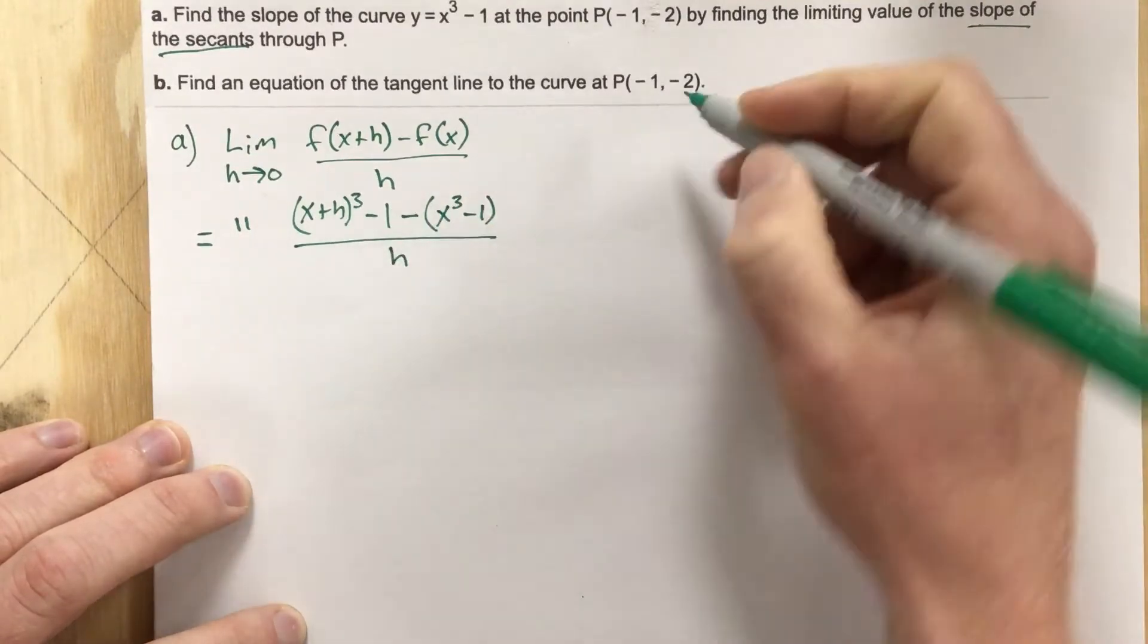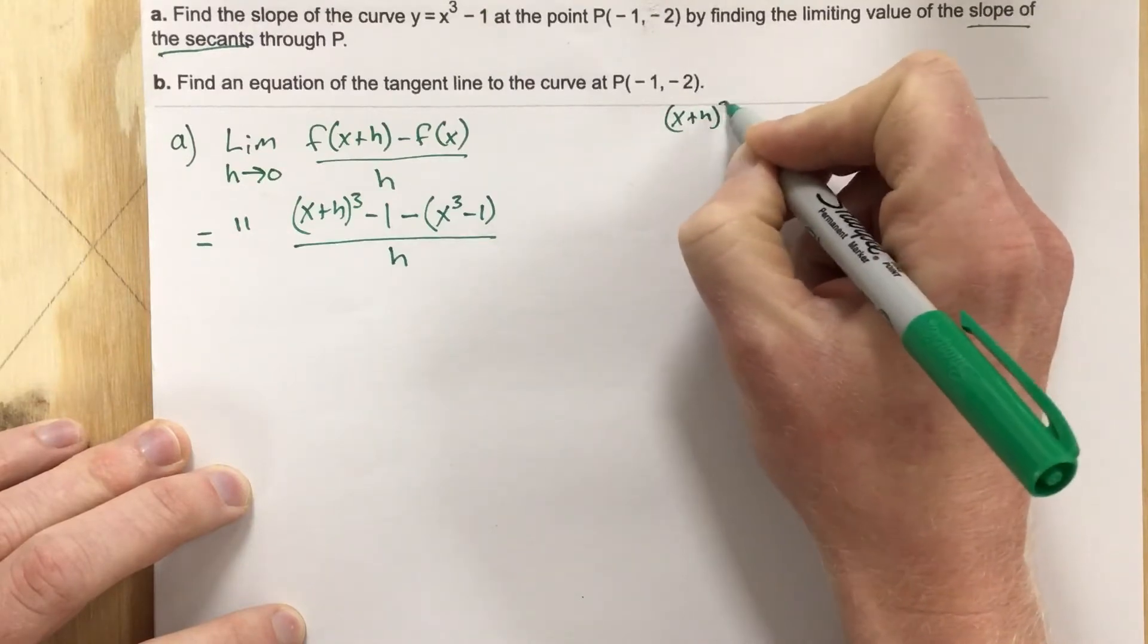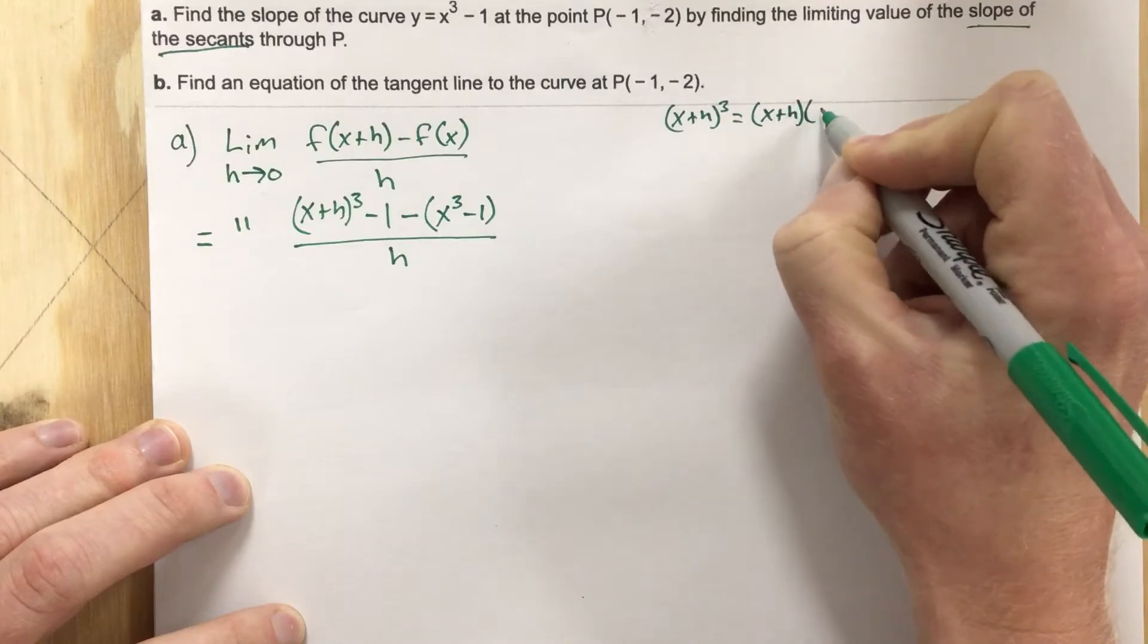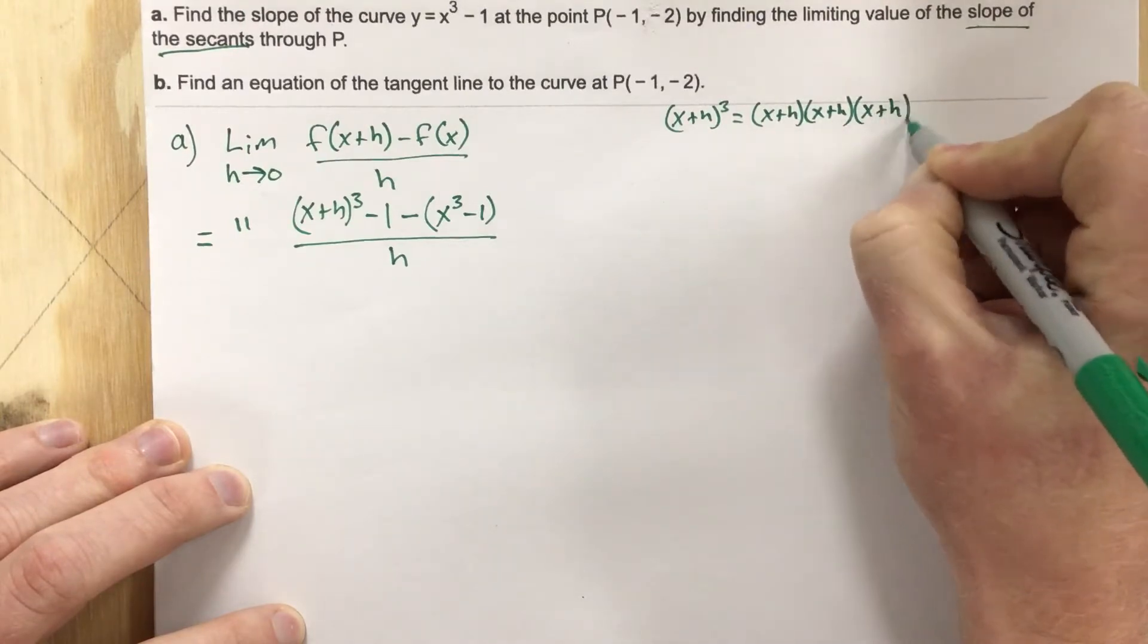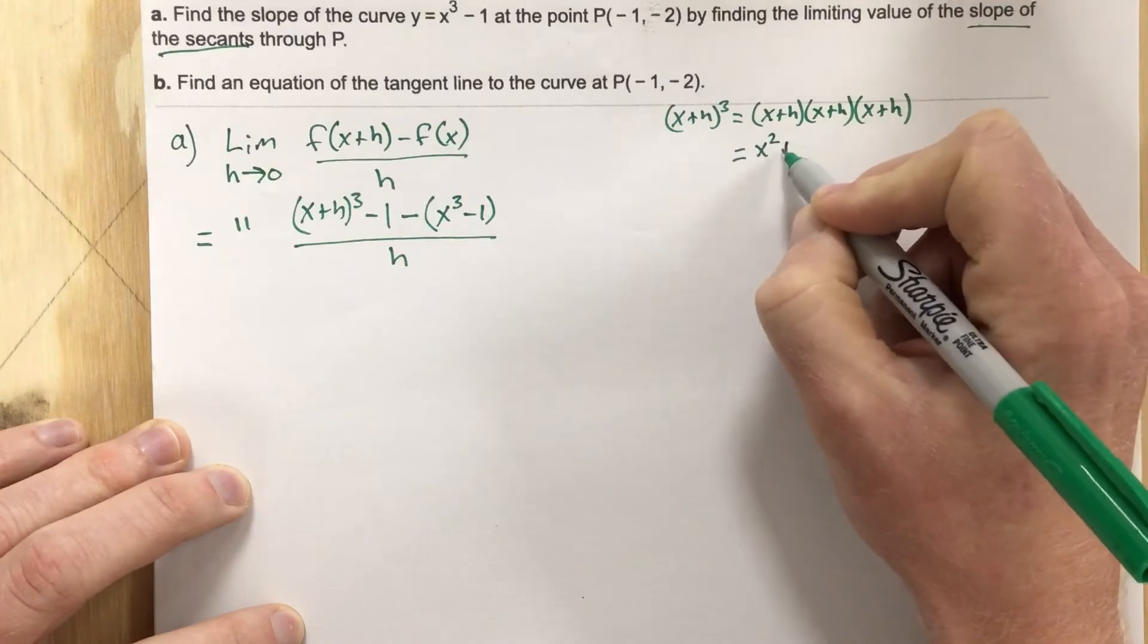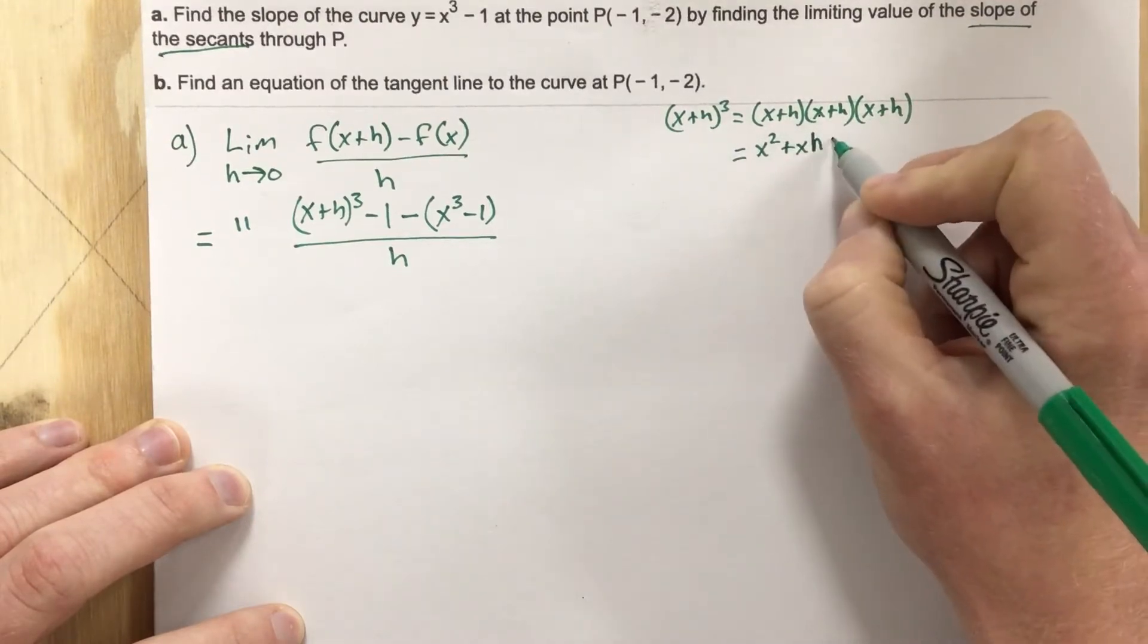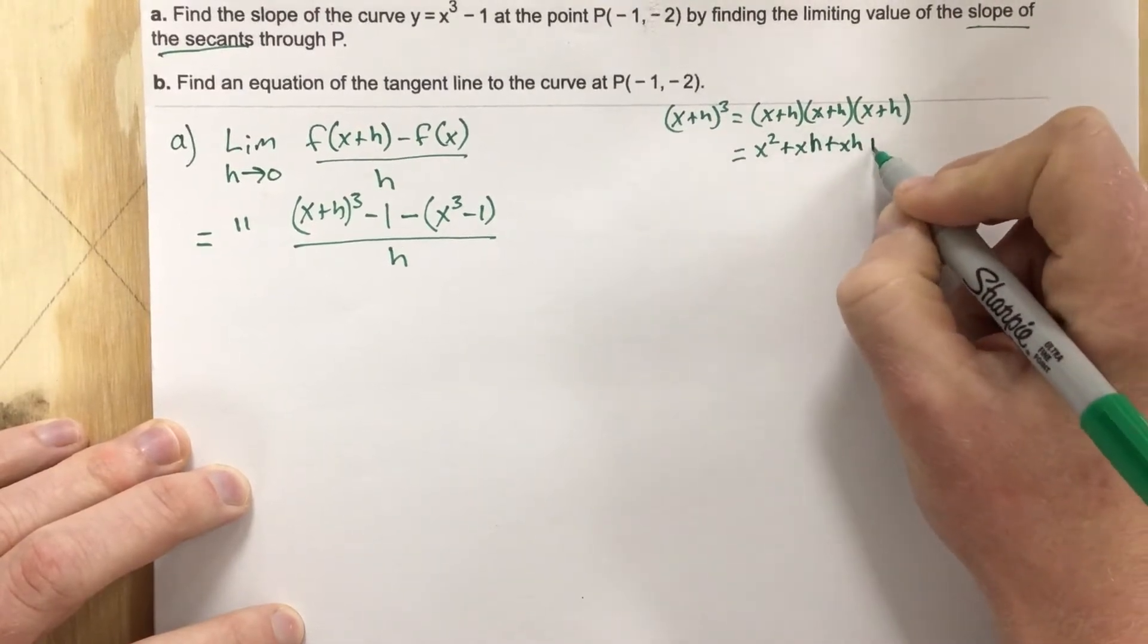Now over here to the left, we need to evaluate x plus h cubed, and that's equal to x plus h times x plus h times x plus h. When we multiply that, we get x times x is x squared, x times h is xh, h times x is also xh, h times h is h squared.